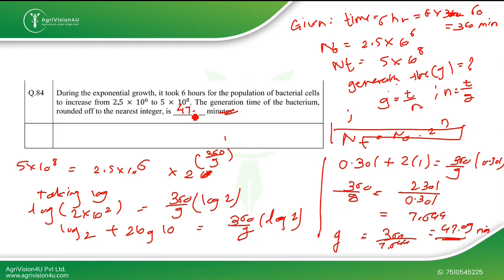The correct answer for this numerical is approximately 47 minutes. The two key formulas needed are g = t/n and Nt = N₀ × 2ⁿ. This concludes the solutions for GATE Excel Microbiology 2023.